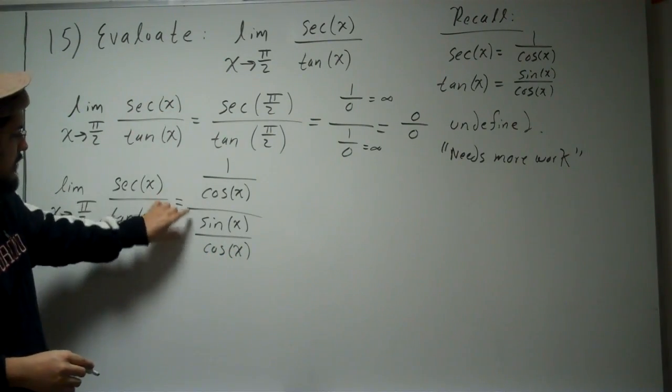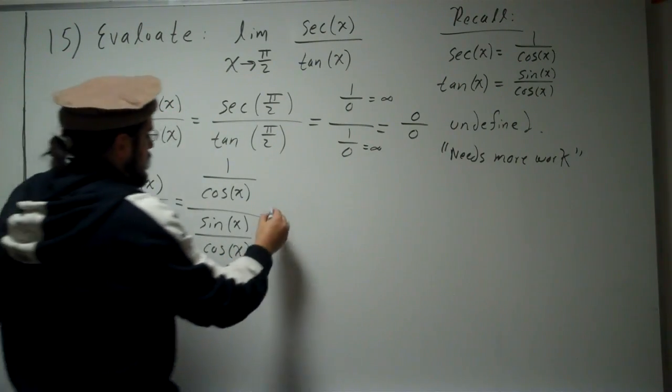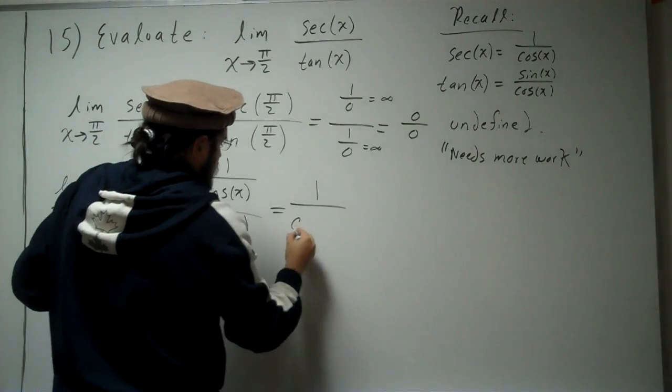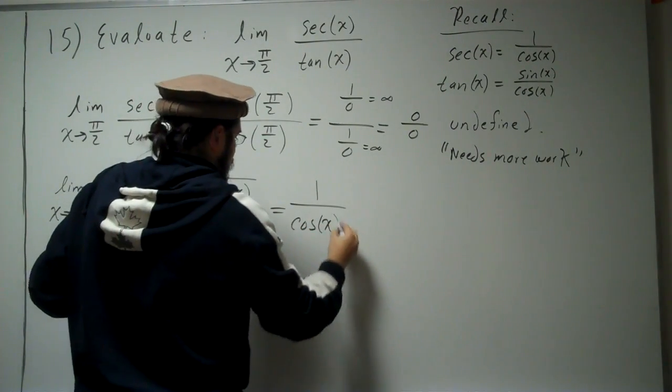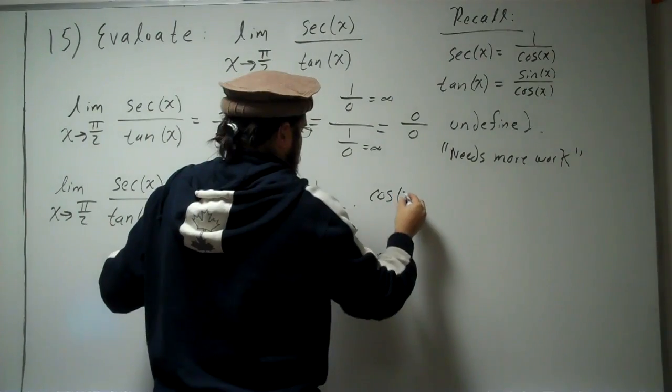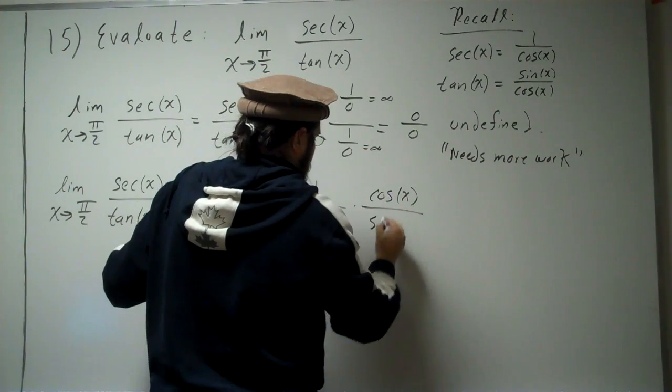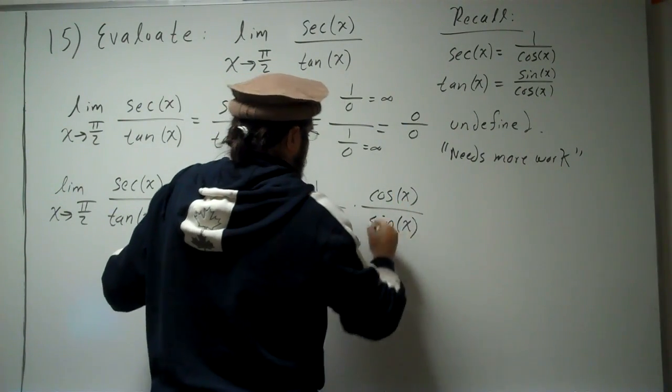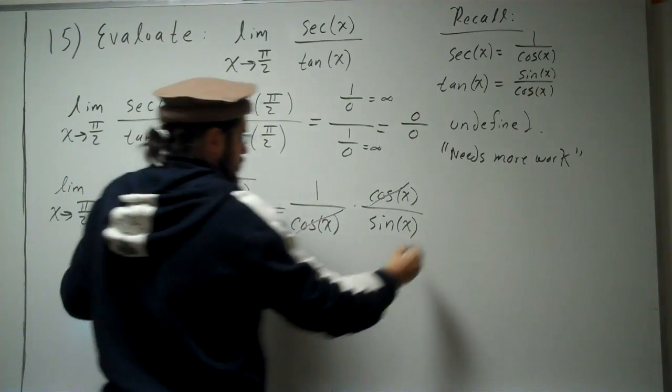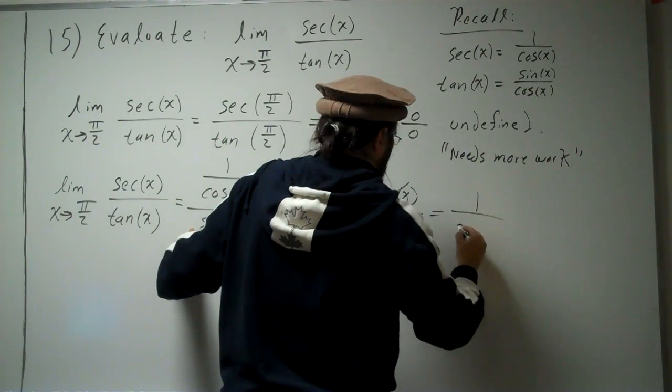Alright, so now we have a fraction divided by another fraction. Just multiply by the reciprocal, times cosine of x over sine x. So the cosine is going to cancel out, and you're left with 1 over sine of x.